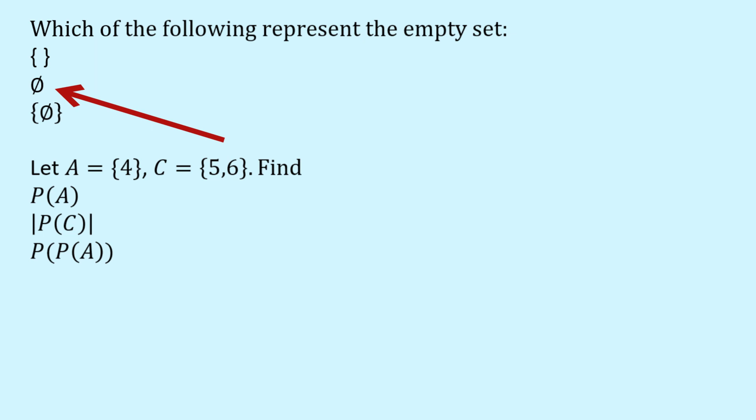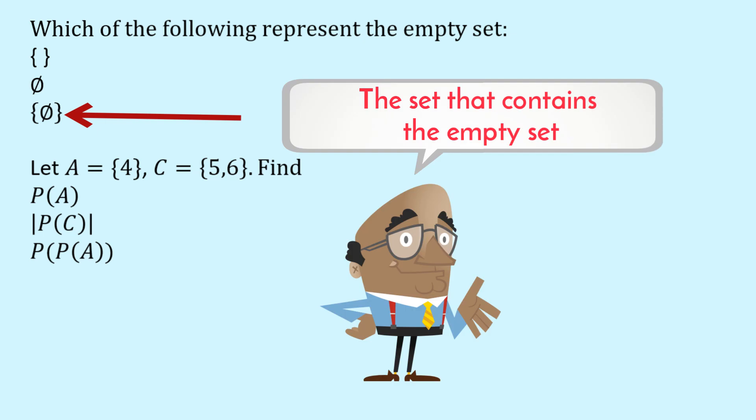The reason I put this all up is that I want you to avoid using the third one unless that's exactly what you want. This third one is not the empty set. This is a set that contains the empty set. And it's important you don't confuse all of that because examiners really don't like it if you use the third representation to mean one of the first two.